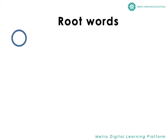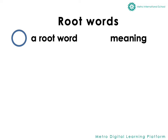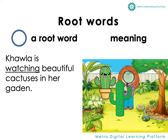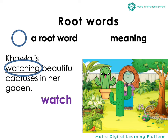Now, let's circle a root word in each underlined word. Then we will also figure out the meaning of that word. Let's look at this sentence: Khaula is watching beautiful cactuses in her garden. What is the root word of the word watching? Watch. Yes. The meaning of the word watch is to look at something.